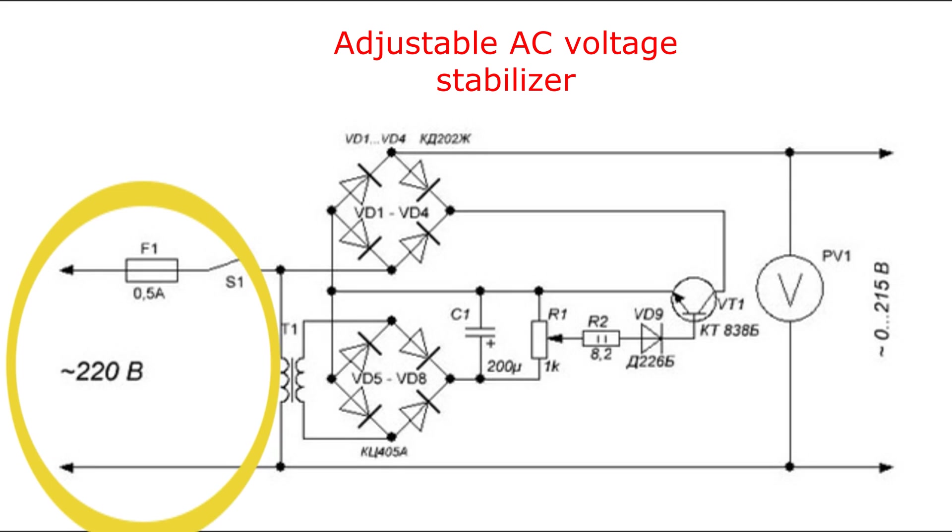This circuit includes a 220V AC fuse F1 at 0.5A, then it is turned on by the toggle switch S1, and the voltage goes to the transformer.